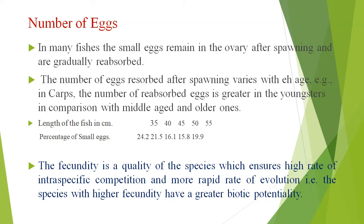In many species, the small eggs remain in the ovary after spawning and are gradually reabsorbed. The number of eggs reserved after spawning varies with the age. For example, in carp, the number of reserved eggs is greater in younger fish compared with middle-aged and older ones.